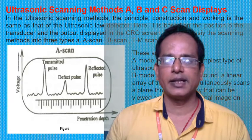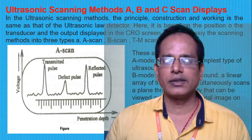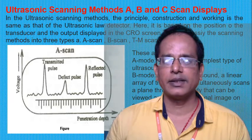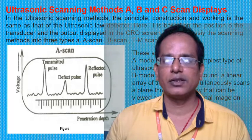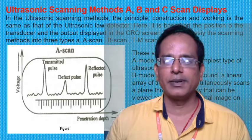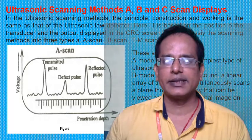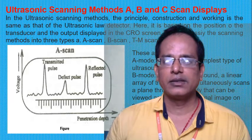Everything in the ultrasonic scanning method depends upon the principle of ultrasonic sound transmission, and the construction and working is the same as that of an ultrasonic detector. It is based on the position of the transducer and the output display on the CRO screen, and that is how it is categorized into A, B, and C scan display.